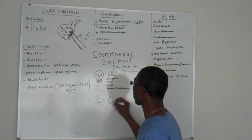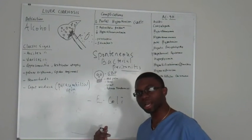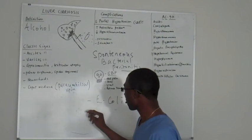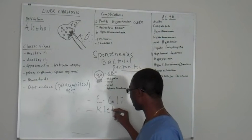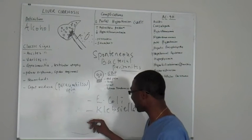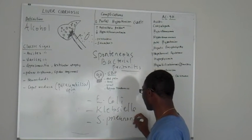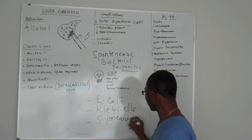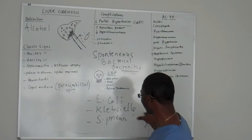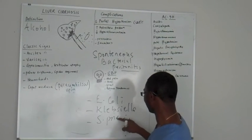E. coli. Man, this guy's a bad boy — he does a lot of damage. He also has his friend Klebsiella and one of his other friends, Strep pneumoniae. These nasty bugs — you've probably heard about them before.